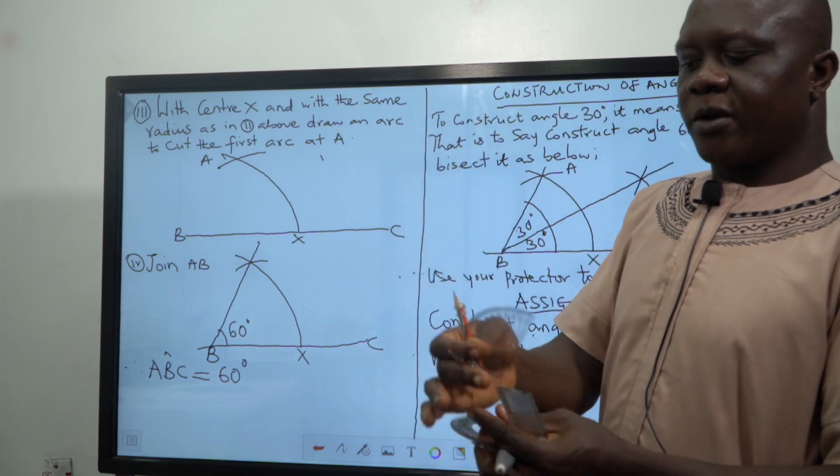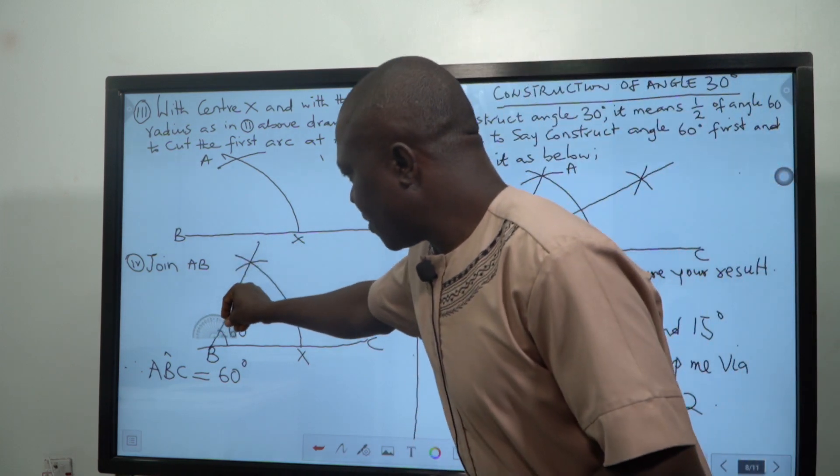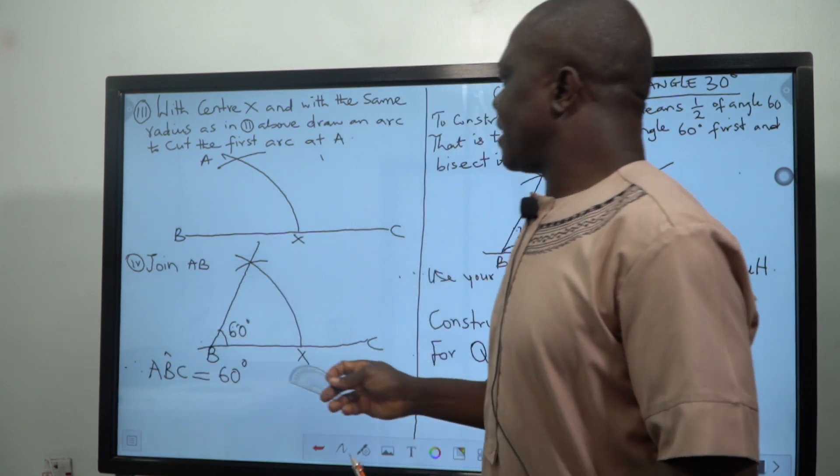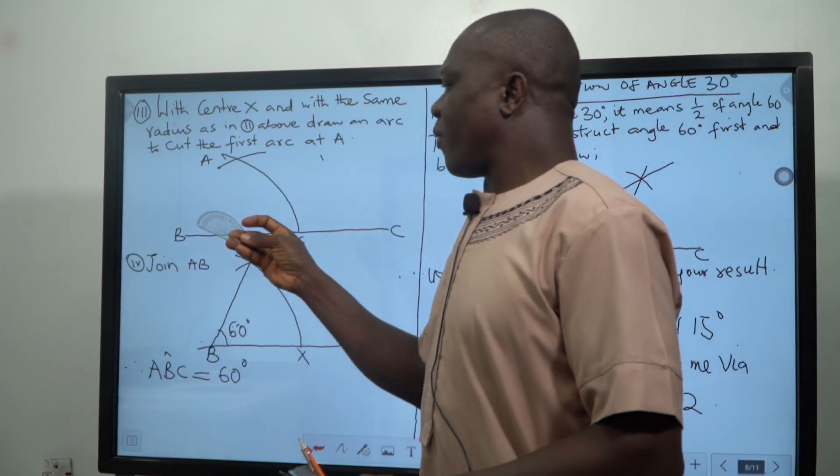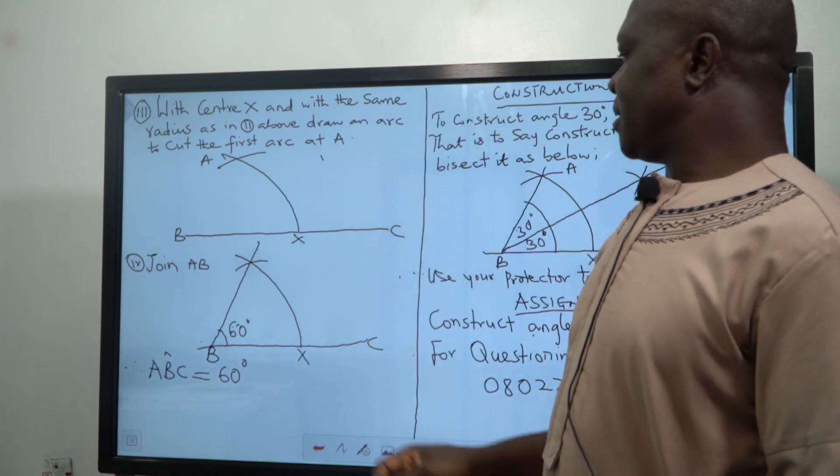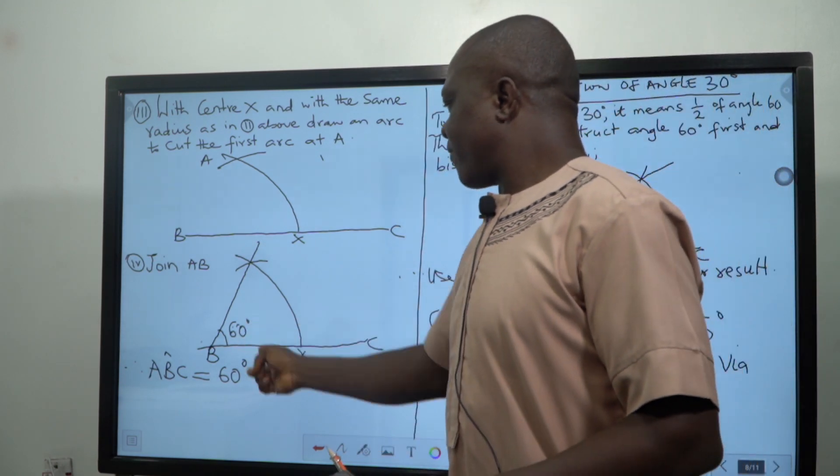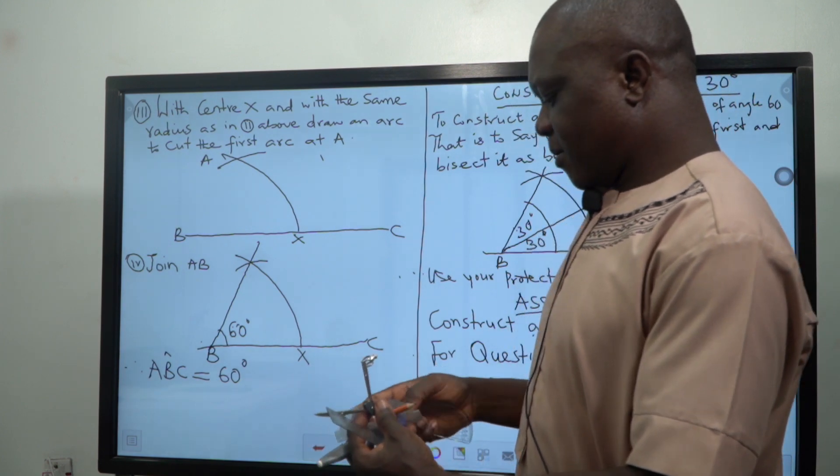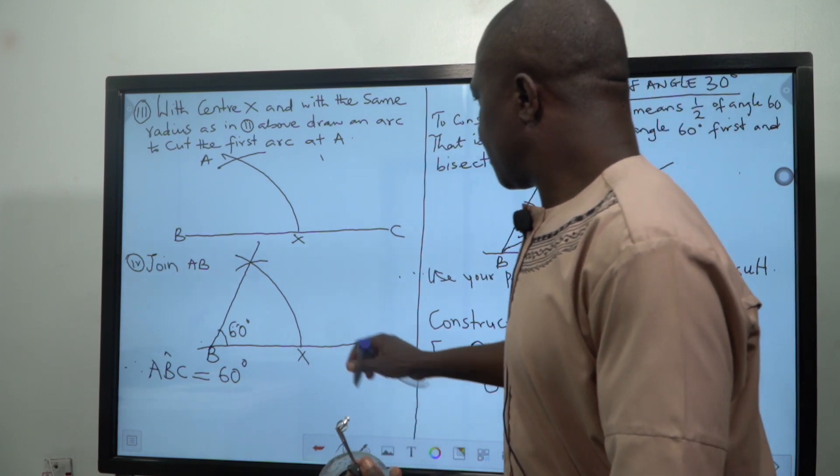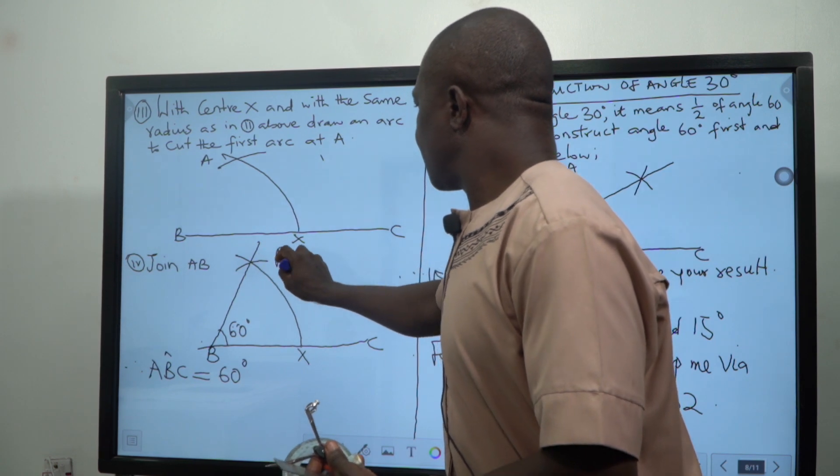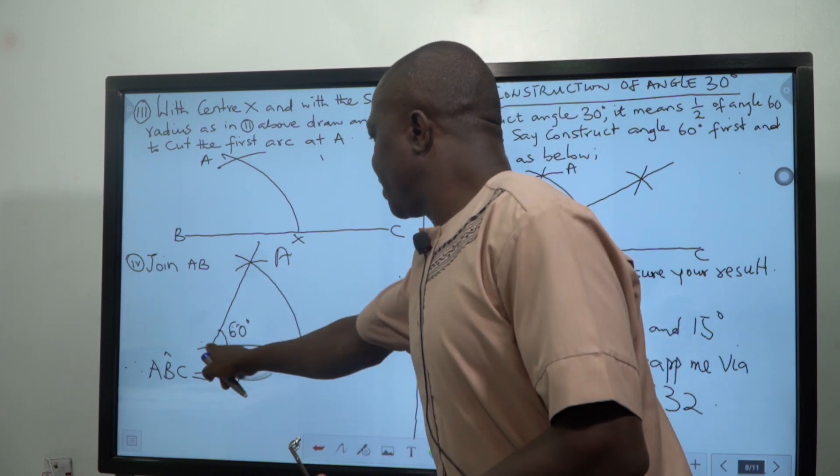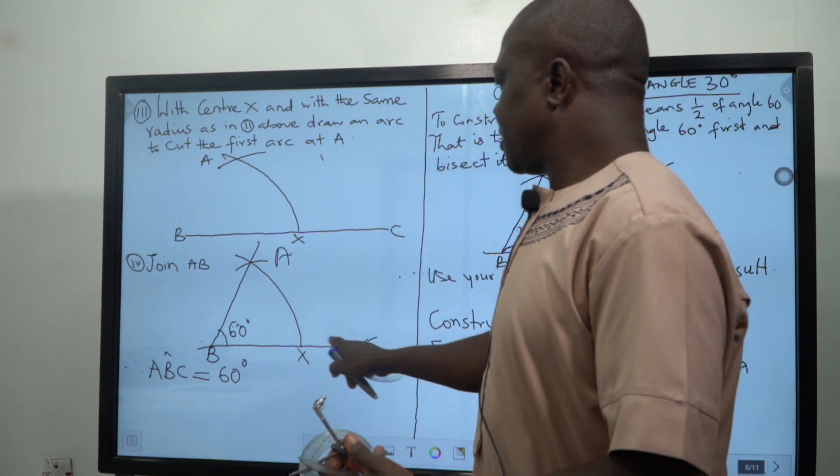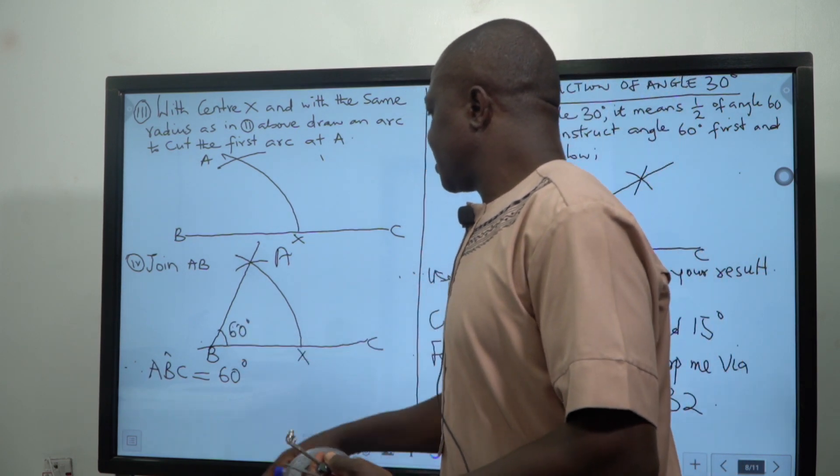Which we can confirm by the use of a protractor. If you now place protractor here, you will see that this line here will be at the top of 60 degrees, which shows you that the angle we have constructed, and that's why we say that the angle ABC is equal to 60 degrees.